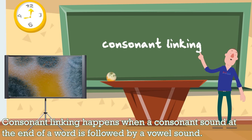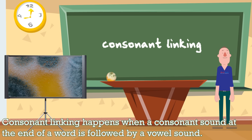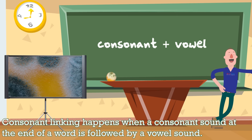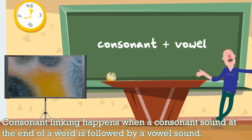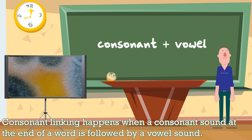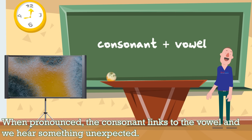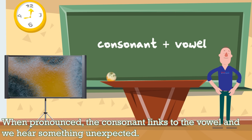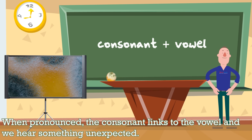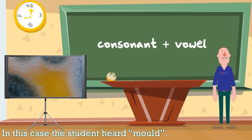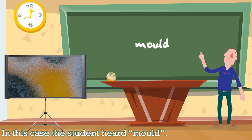Consonant linking happens when a consonant sound at the end of a word is followed by a vowel sound. When pronounced, the consonant links to the vowel and we hear something unexpected. In this case, the student heard "mould."